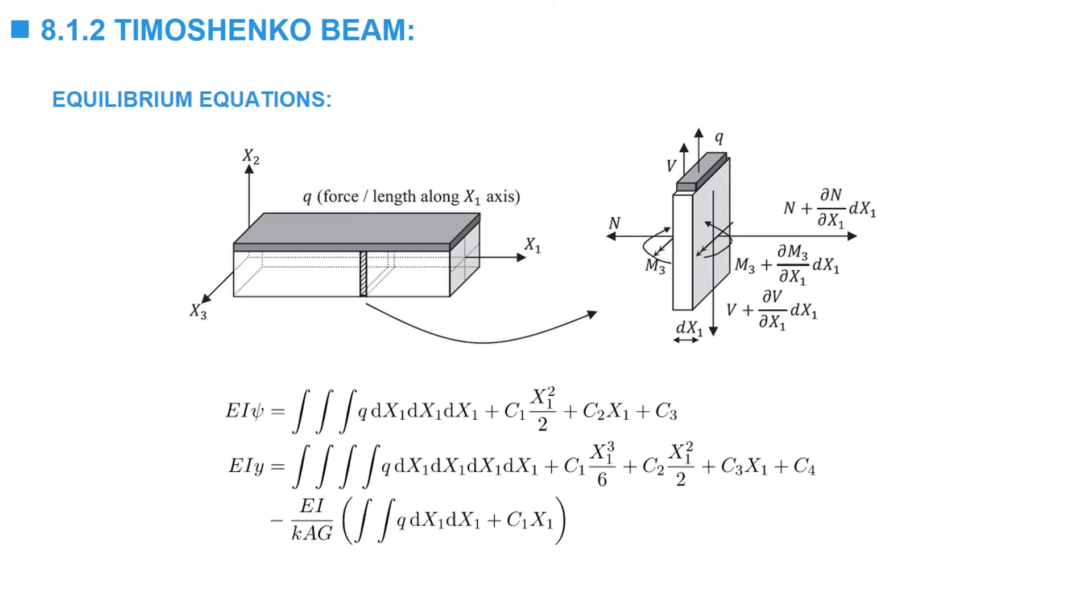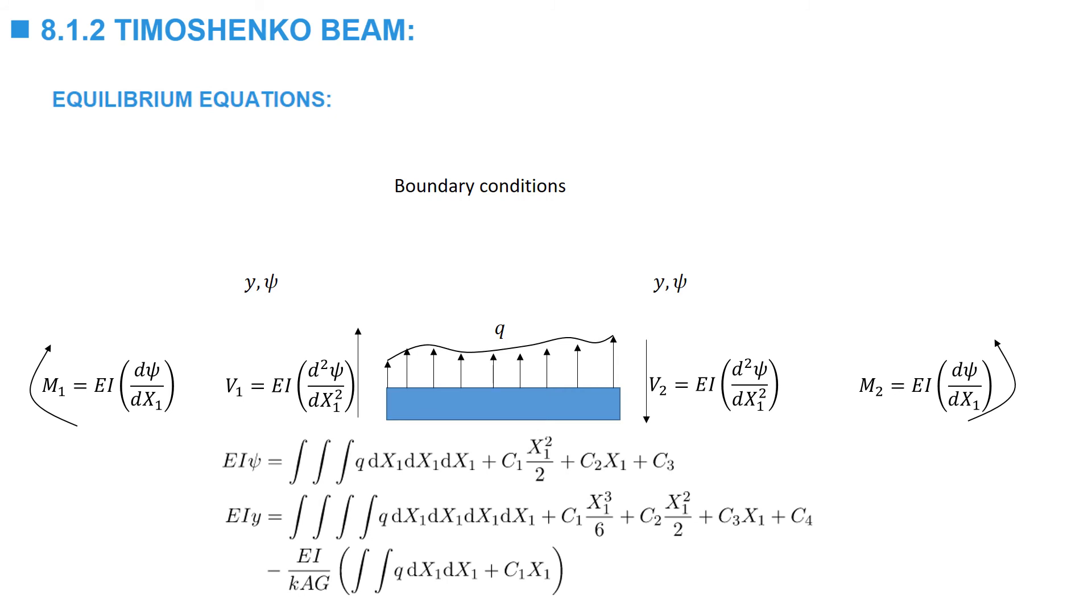By integrating those two equations, we end up with these two equations, and you can see that integration produces four constants that are needed in order to find the cross-sectional rotation and the displacement of the beam. The four boundary conditions are given in terms of M or psi, the shear or the displacement, on one end or on the other end.